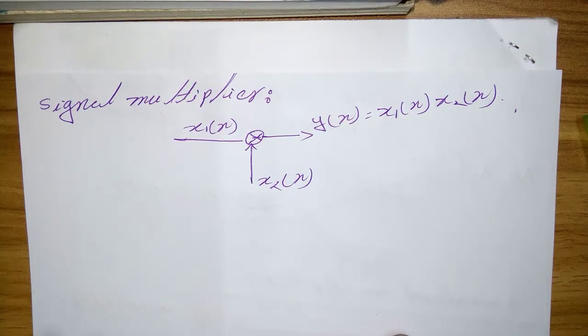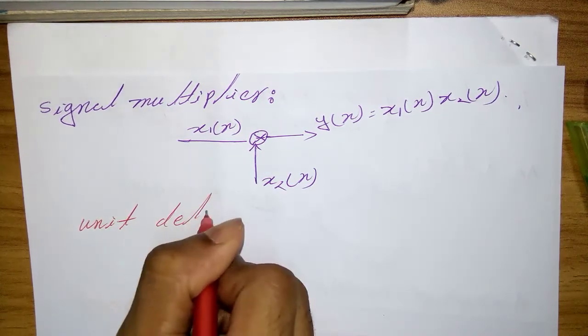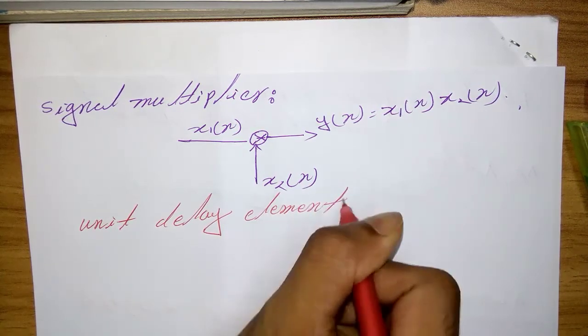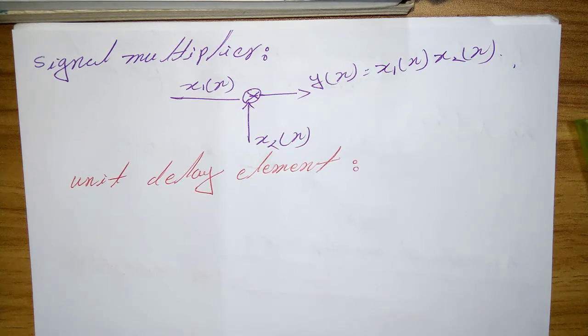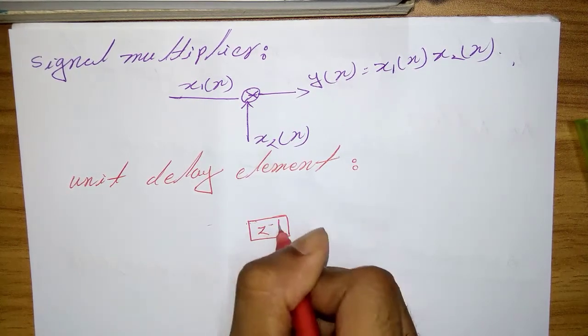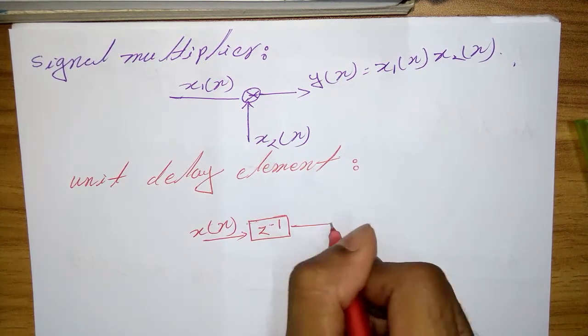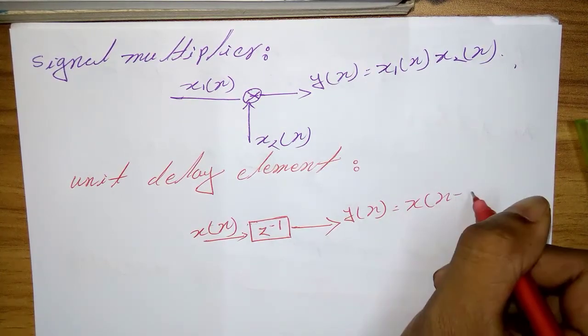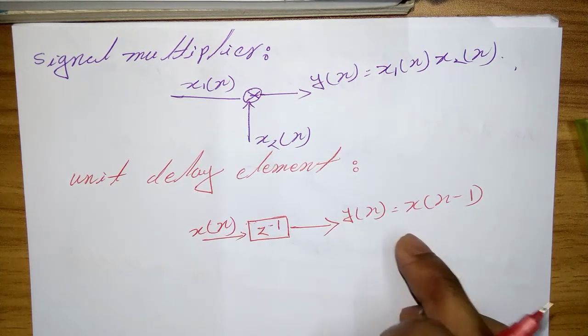The unit delay element simply delays the signal passing through it by one sample. In this case, the block diagram is very simple: the input x(n), and output y(n) = x(n-1). If the input signal is x(n), the output is x(n-1).